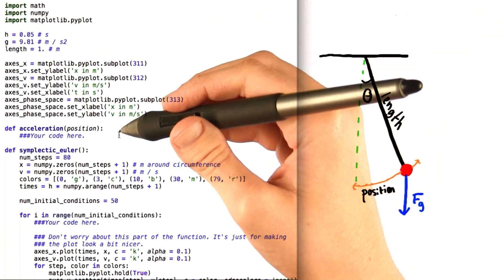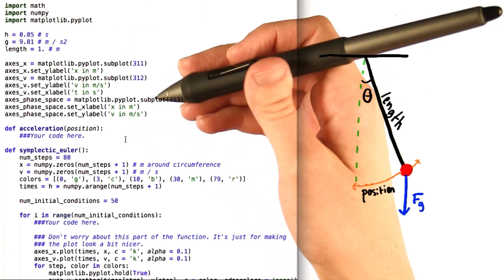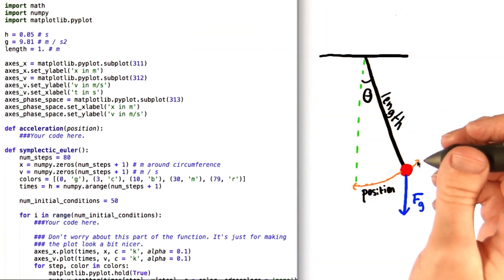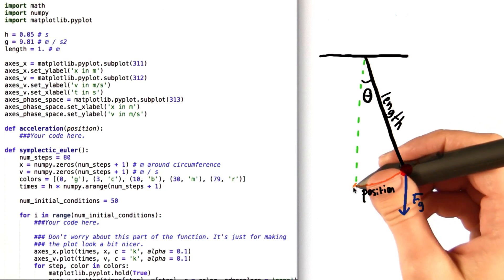What we're asking you to do is to first fill in this definition for the acceleration of the pendulum, showing how it depends on the position of the weight. Now, if you think about the way that a pendulum swings, you can imagine that if we extended the trajectory, we would get a circle. So position is the length of this curved path.